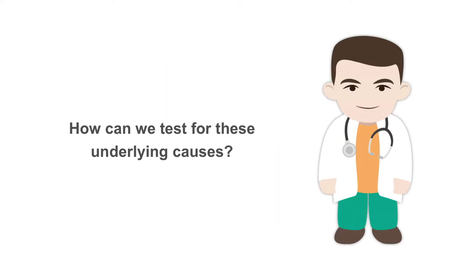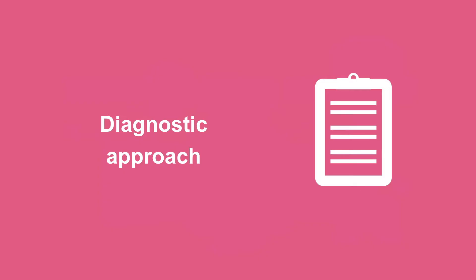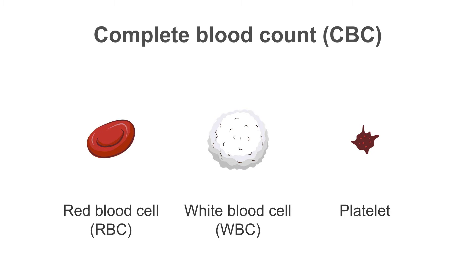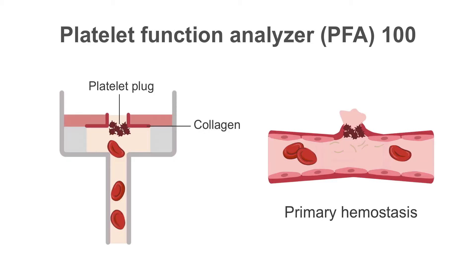How can we test for these underlying causes? Our diagnostic approach should start with the CBC. If the patient has thrombocytopenia, this will be evident from the complete blood count. Several tests are available to establish thrombocytopathia or platelet dysfunction. One common screening test is the platelet function analyzer, or PFA-100, which is discussed in greater detail in another lesson.